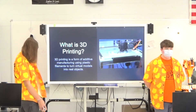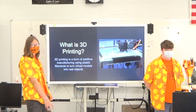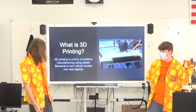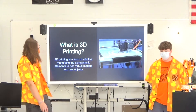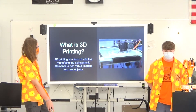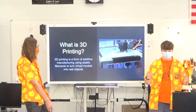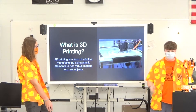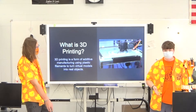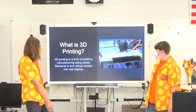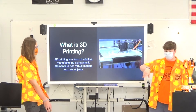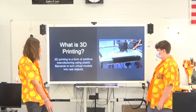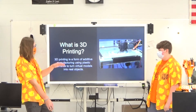3D printing is additive manufacturing. Usually in manufacturing you take a piece of material like an extrusion or sheet metal and drill holes or cut it to remove material. But 3D printing starts from nothing and adds layers of plastic to build up the shape — think of it like cutting out sheets of paper and stacking them on top of each other.